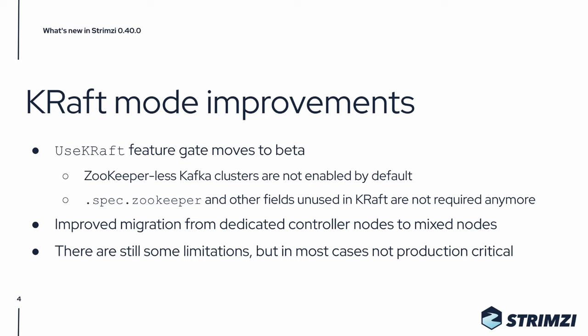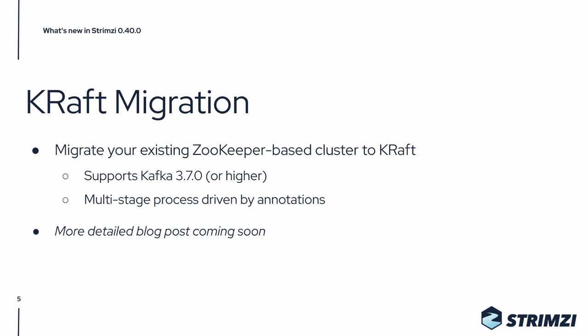Strimzi 0.40 also adds support for migration of existing ZooKeeper-based Kafka clusters to KRaft. The migration requires you to use at least Kafka 3.7, and it consists of a multi-stage process driven through annotations. For more details, please check the documentation, and we will also publish a blog post about this soon.